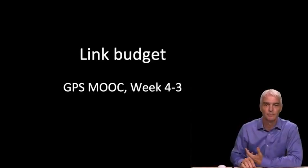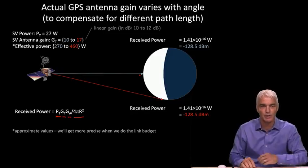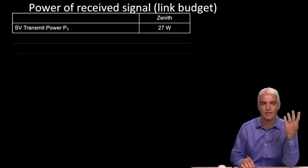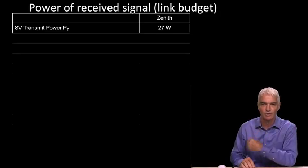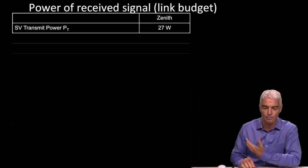Now we have all the particular parameters, we can go and work out the entire link budget for how much of the 27 watts that started at the satellite makes it down into our receiver. So we begin with 27 watts. I'm going to take you through something called a link budget, which is just simple accounting.